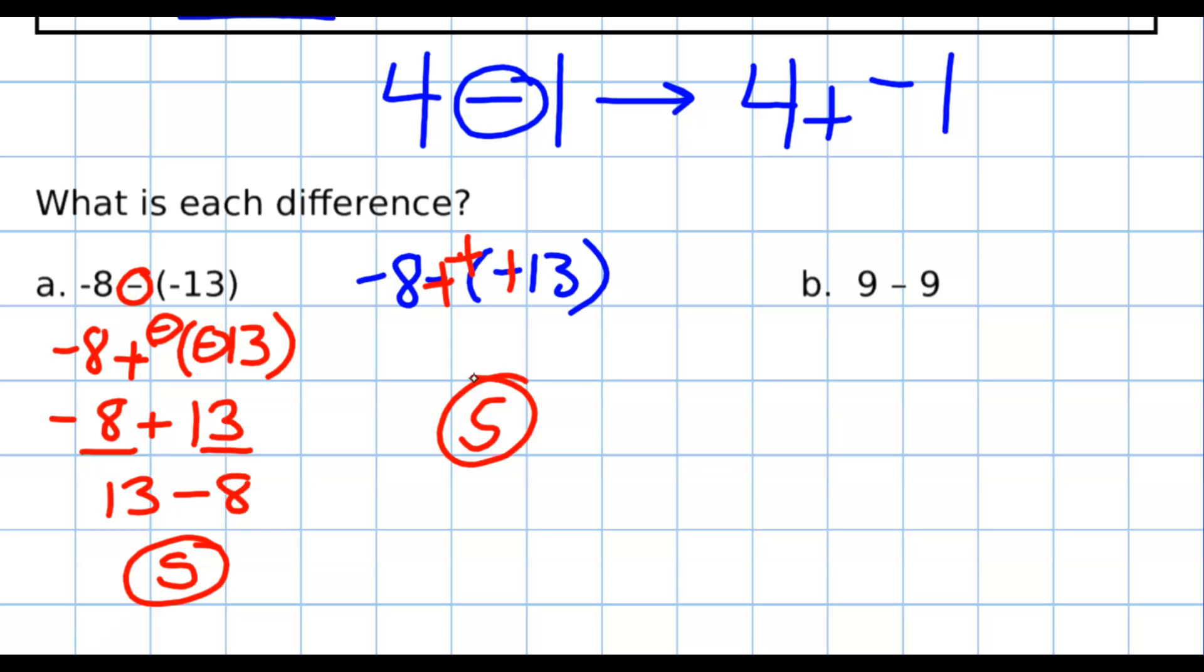That's how I would have done the problem. So look at the next example. 9 minus 9. Now, simple problem. I hope 9 minus 9 is 0, but the way you do this in algebra is you switch the subtraction to be add the opposite. 9 plus negative 9 is 0.